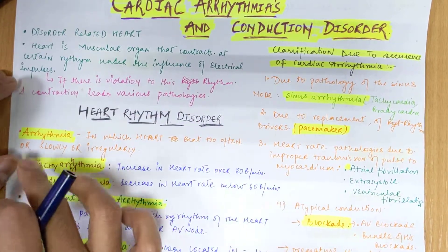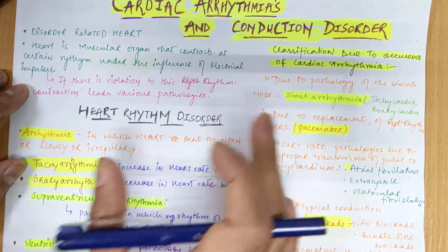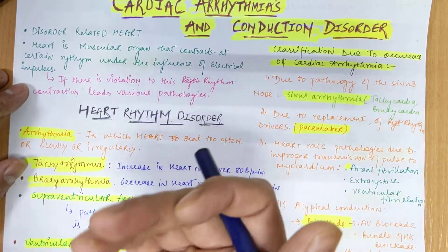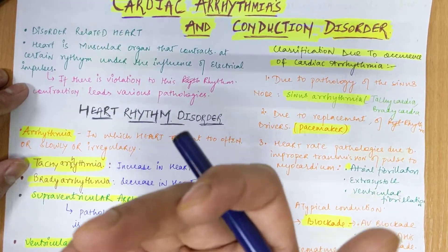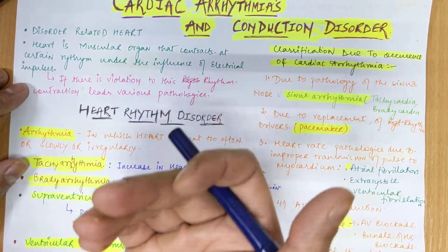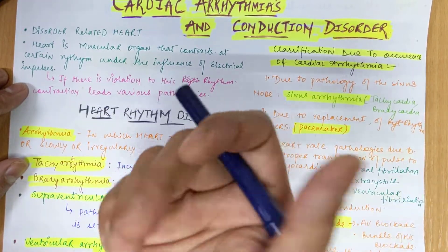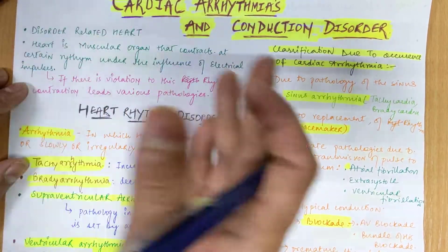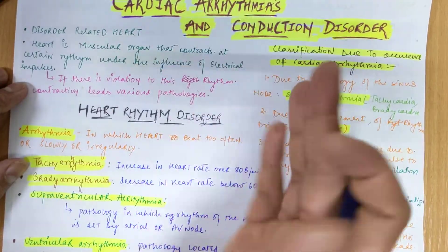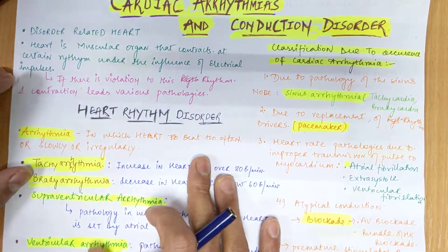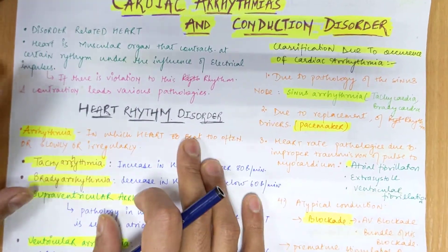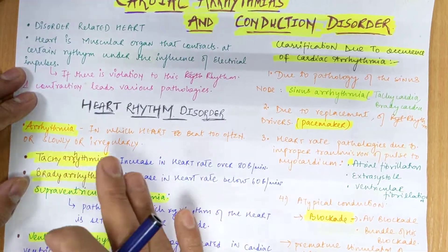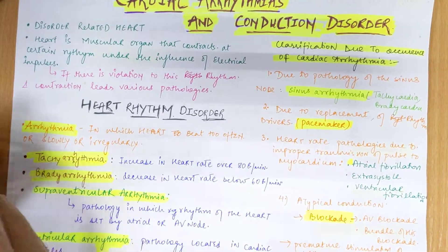Now, what are the heart rhythm disorders? In arrhythmia there is an abnormality in how the heart beats — it can beat slowly, very fast, or irregularly, meaning it can sometimes become slow and sometimes become fast. That is actually arrhythmia. There can be three main possibilities.